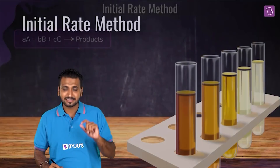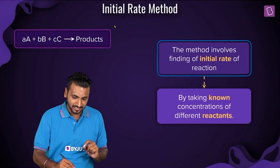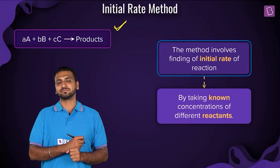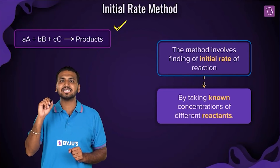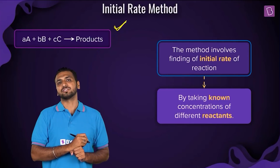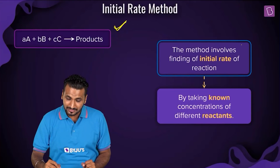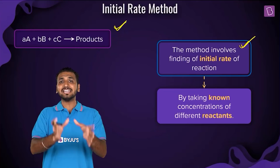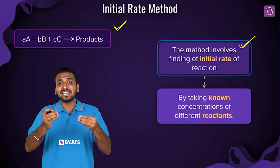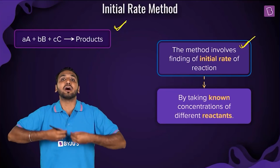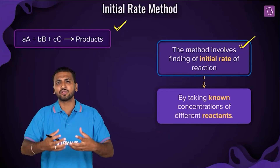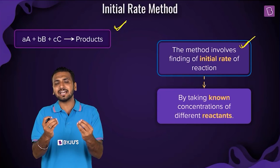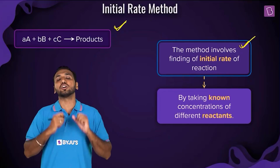Let's say there is a reaction: A, B, C reacting to form products. The small A, B, C are the stoichiometric coefficients. Now, what do you mean by the word 'initial rate'? The initial rate is the rate when the reaction is about to start — at the time when you started the observation.